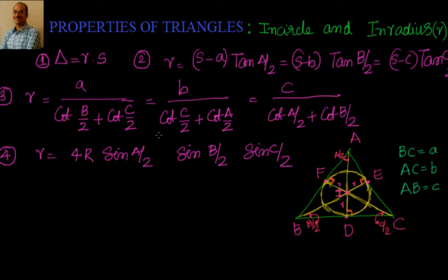Capital R is the circumradius and small r is the inradius. To get the incircle, once you have a triangle, take each of the vertices and draw angular bisectors from them. The point of concurrency of the angular bisectors is the incenter. This incircle will touch all three sides of the triangle, making a right angle at each point of contact. The radius from the incenter to the point where it touches the triangle is the inradius r.